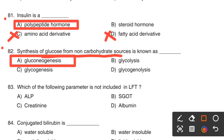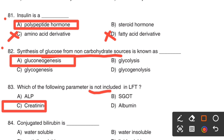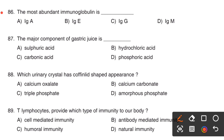Next one. Which of the following parameters is not included in LFT (Liver Function Test)? Option A, ALP. Option B, SGOT. Option C, Creatinine. Option D, Albumin. ALP, SGOT, and albumin belong to LFT. So the right answer is Option C, Creatinine. Creatinine belongs to RFT.